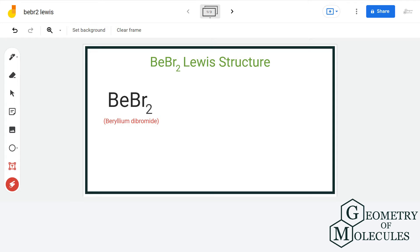Hello guys, welcome back to our channel. In this video, we will discuss the Lewis structure of BeBr2. It's a chemical formula of beryllium dibromide.